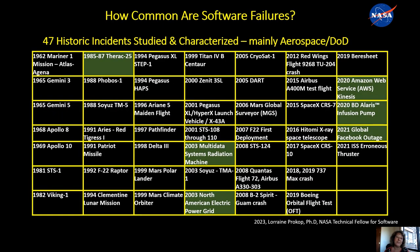And now on to the fun stuff. This is the result of a study we performed at NASA in 2023 to study all the incidents in aerospace — and some non-aerospace — since the beginning of use of computers, to characterize how software has failed. This is 47 incidents; I do have a paper under consideration that goes through each of these in detail.